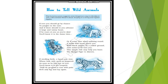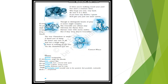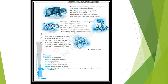'If strolling forth, a beast you view, whose hide with spots is peppered, as soon as he has leapt on you, you will know it is the leopard. It will do no good to roar with pain, he will only leap and leap again. If when you are walking round your yard, you meet a creature there who hugs you very very hard, be sure it's a bear. If you have any doubts, I guess, he'll give you just one more caress. Though to distinguish beasts of prey, a novice might nonplus, the crocodile you always may tell from the hyena thus. Hyenas come with merry smiles, but if they weep, they are crocodiles. The true chameleon is small, a lizard sort of thing. He hasn't any ears at all, and not a single wing. If there is nothing on the tree, it is the chameleon you see.'